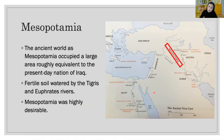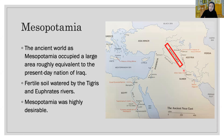Let's see Mesopotamia first. The region known to the ancient world as Mesopotamia occupied a large area roughly equivalent to the present-day nation of Iraq. Fertile soil watered by the Tigris River and the Euphrates River made Mesopotamia highly desirable, but a lack of natural boundaries made it easy to invade and difficult to defend.